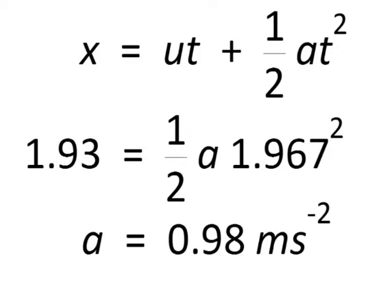Using x equals ut plus a half at squared, we get an acceleration of 0.98 meters per second squared.